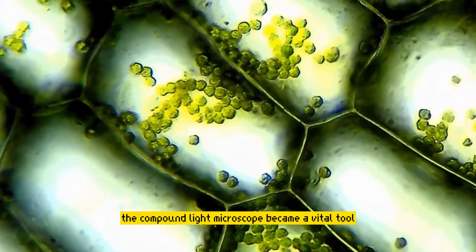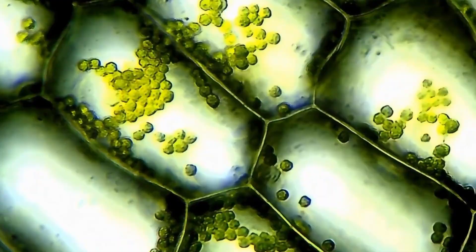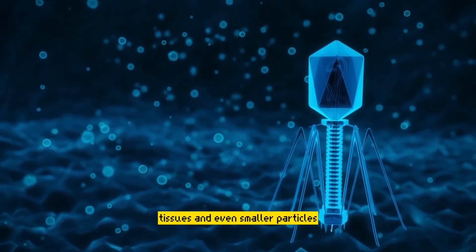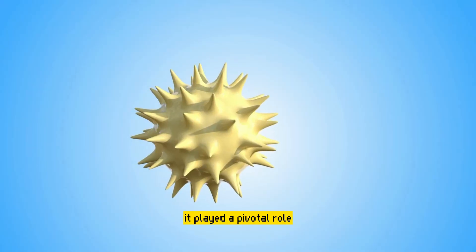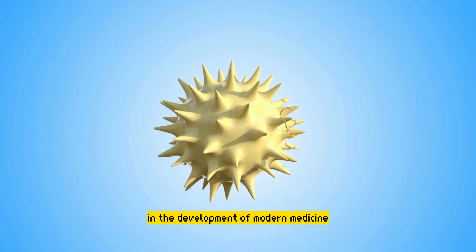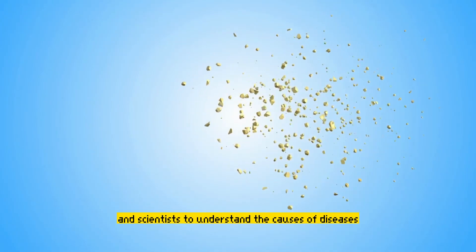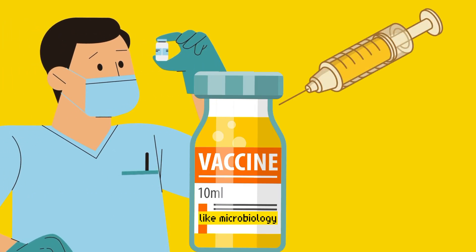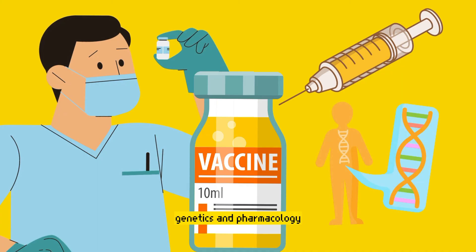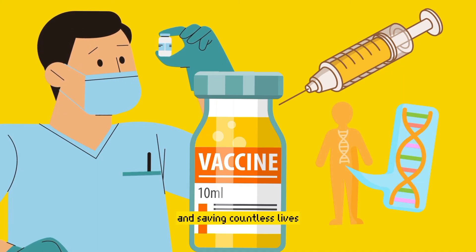The compound light microscope became a vital tool in various scientific disciplines, enabling researchers to study cells, tissues, and even smaller particles, such as viruses. It played a pivotal role in the development of modern medicine, allowing doctors and scientists to understand the causes of diseases and develop treatments. It also facilitated advancements in fields like microbiology, genetics, and pharmacology, leading to remarkable breakthroughs and saving countless lives.